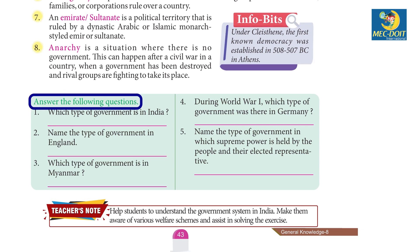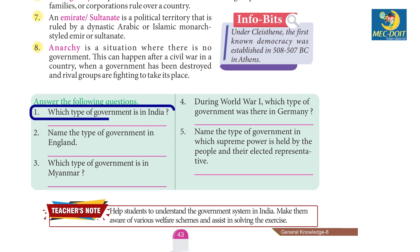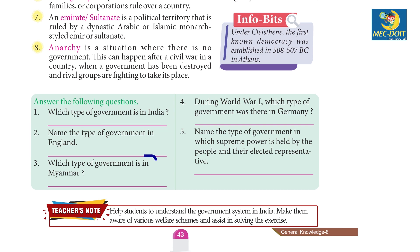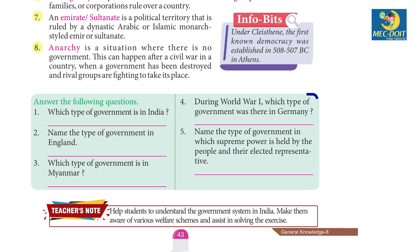Answer the following questions. 1. Which type of government is in India? Answer: Democratic government. 2. Name the type of government in England? Answer: Monarchy government. 3. Which type of government is in Myanmar? Answer: Junta government.